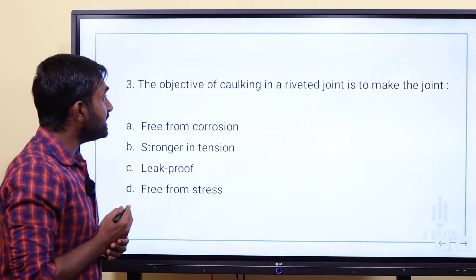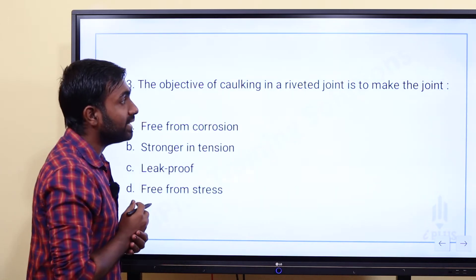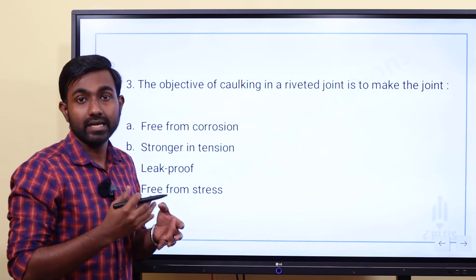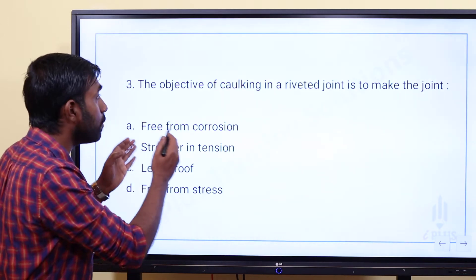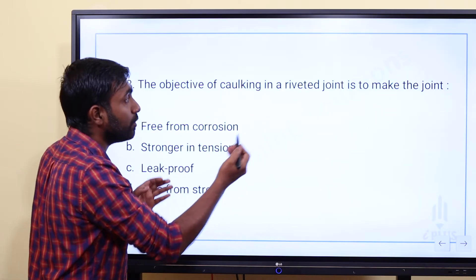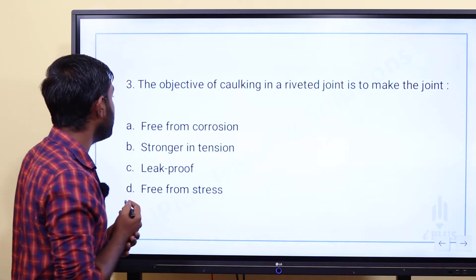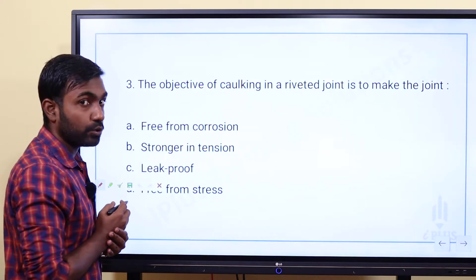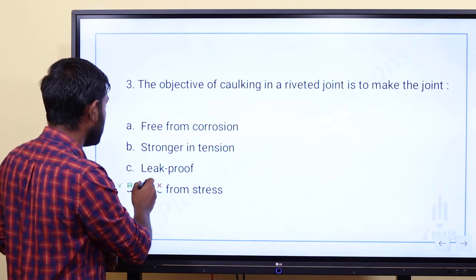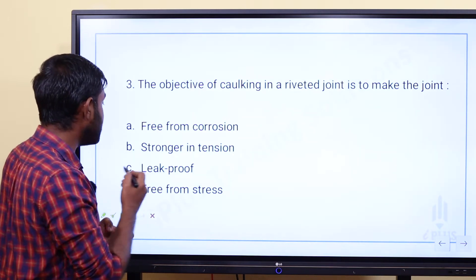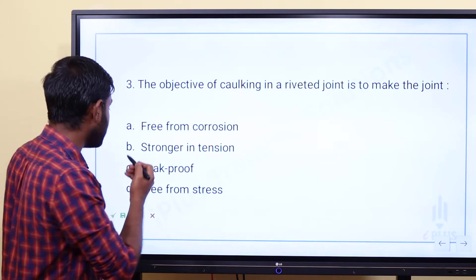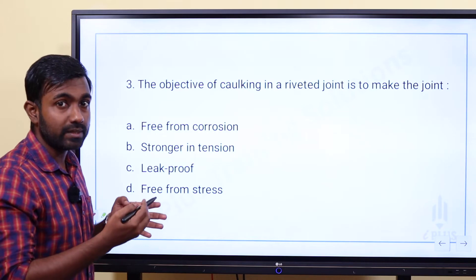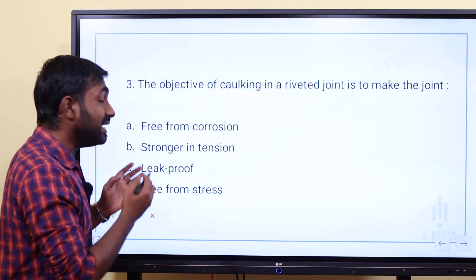The objective of caulking in riveted joint is to make the joint — caulking is a fullering process. Option A is free from corrosion. Option B is stronger in tension. Option C is leak proof. Option D is free from stresses. The answer is leak proof — option C.